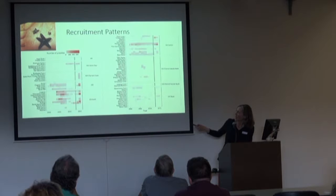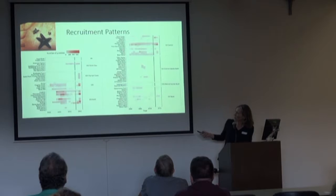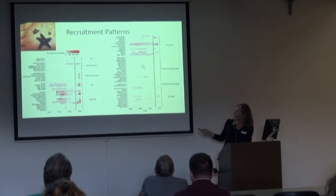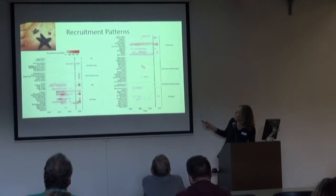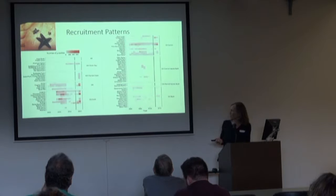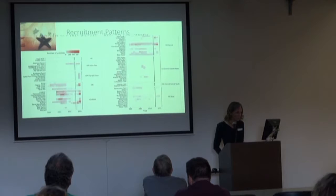But that isn't the pattern across the board. There are lots of areas where we haven't seen a lot of recruitment. Even where we're seeing recruitment, it's kind of patchy in space and time. And then there's this whole portion of the species range where we're seeing very little to no recruitment at all. That's a pretty big deal — there's this whole big area where things are still looking pretty grim for the ochre stars.